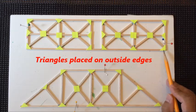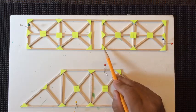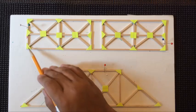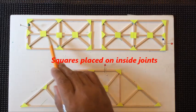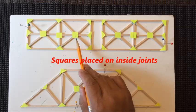If you look on this bottom view, notice how the triangles are placed around the outside edges of the design itself. The squares are used where we have multiple joints, as you can see in the center here.